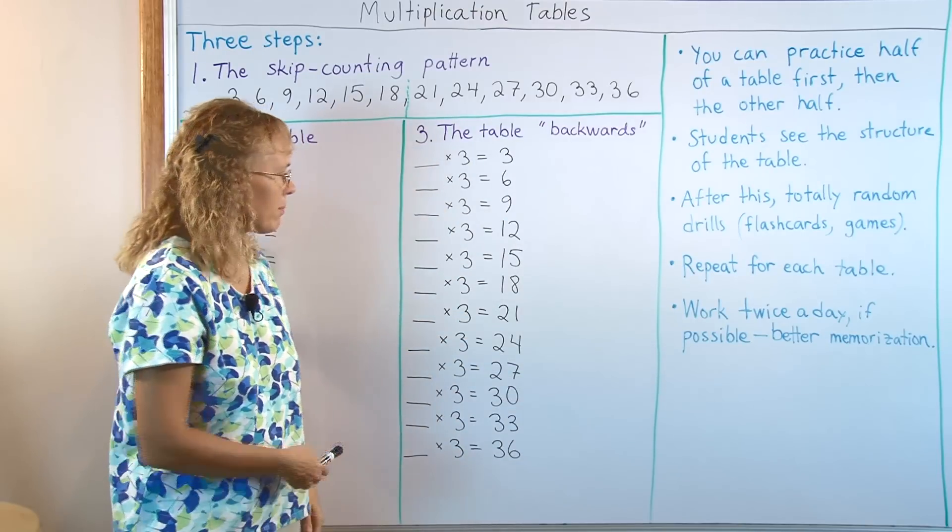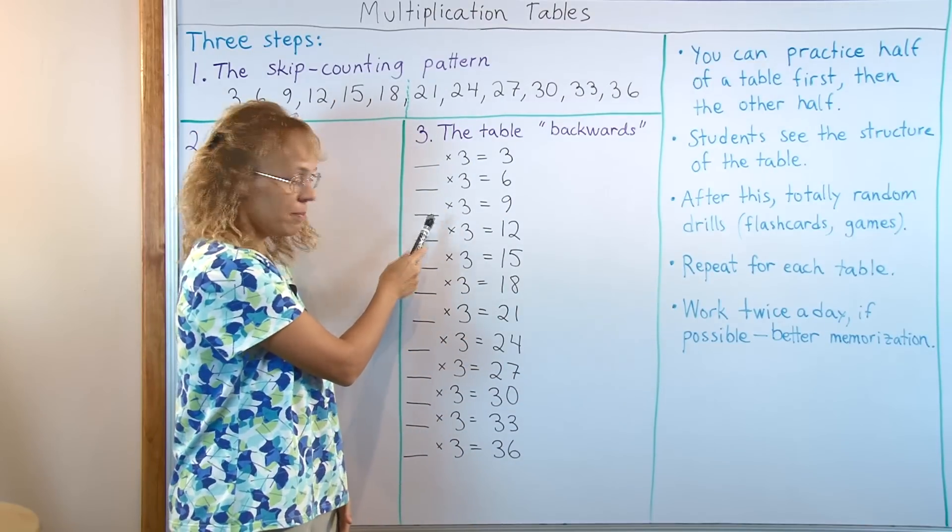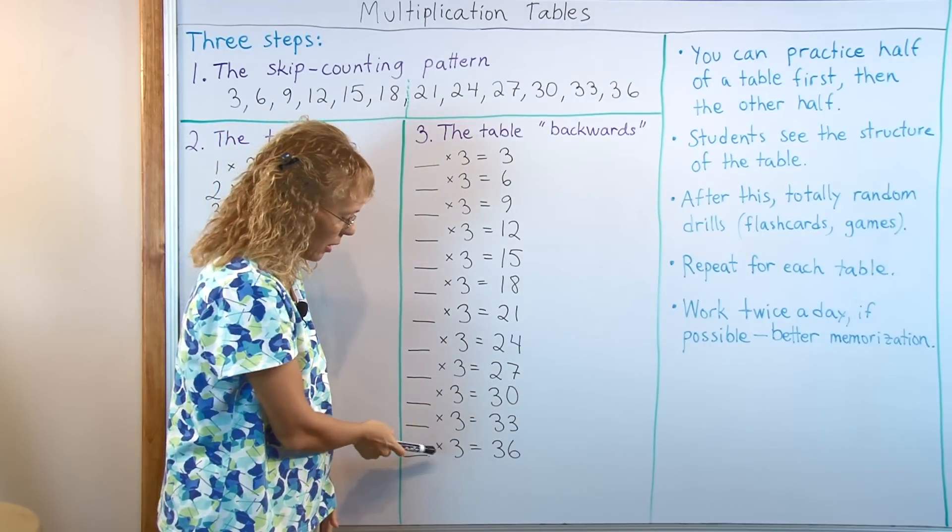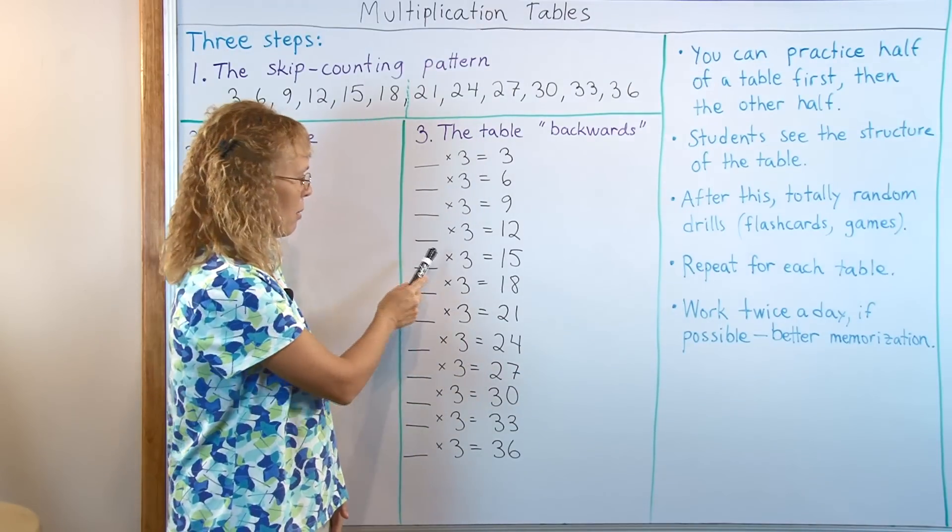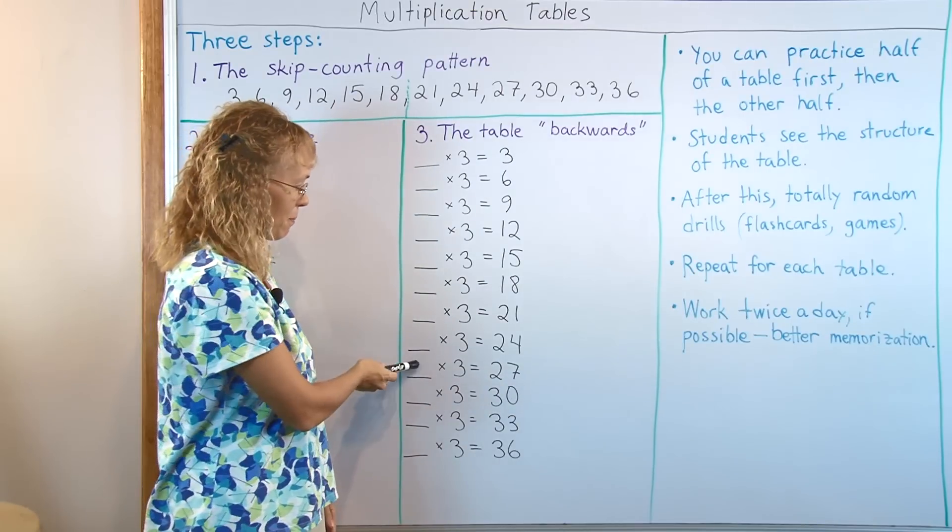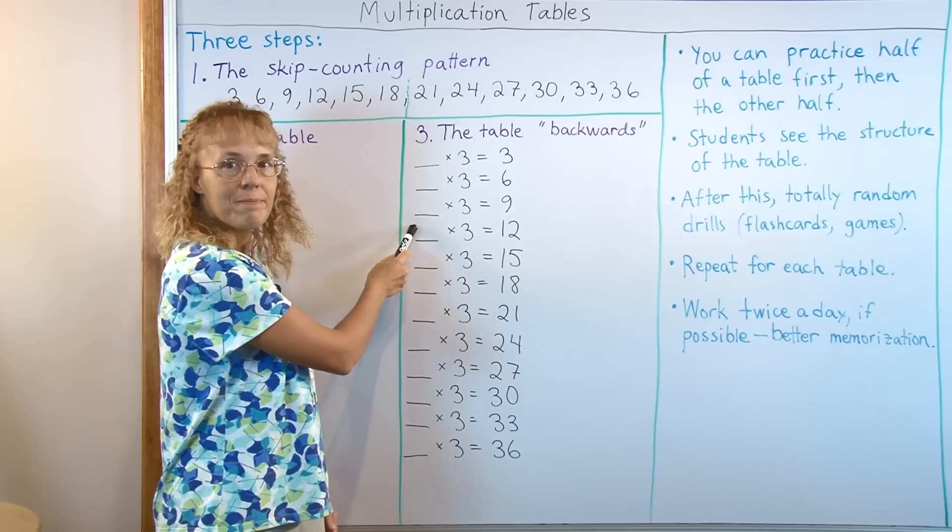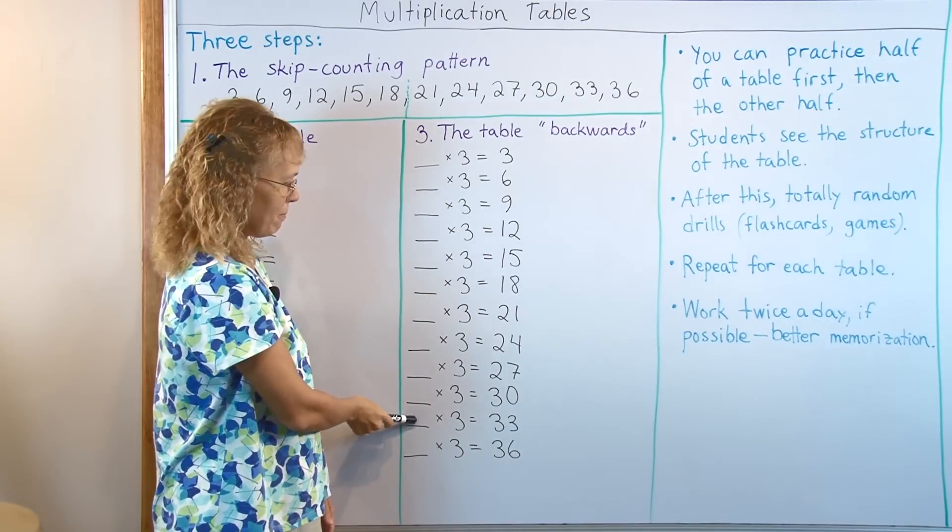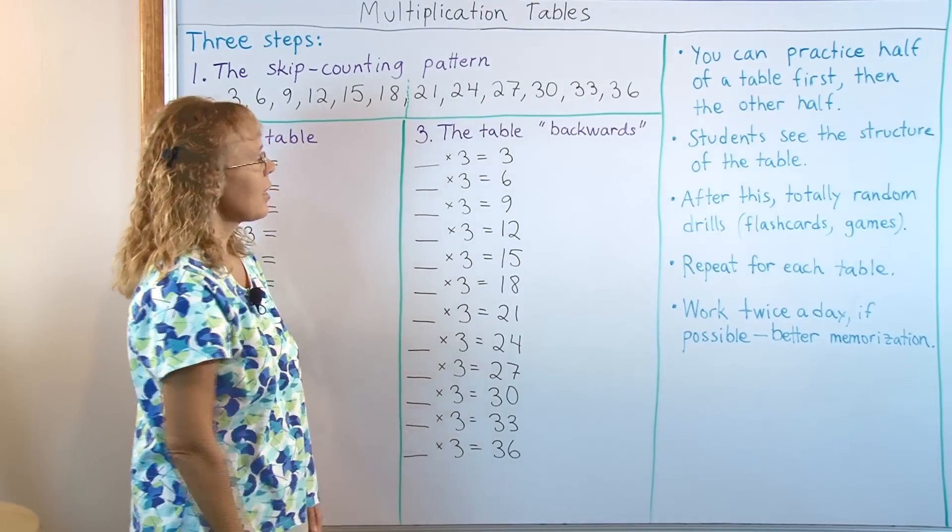And lastly the whole table. How many times 3 is 12? How many times 3 is 27? How many times 3 is 36? How many times 3 is 15? How many times 3 is 30? How many times 3 is 21? Okay.